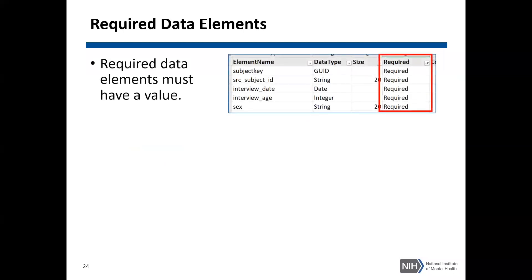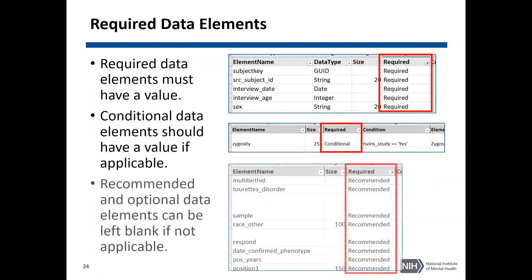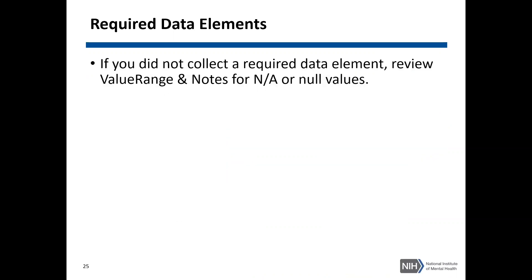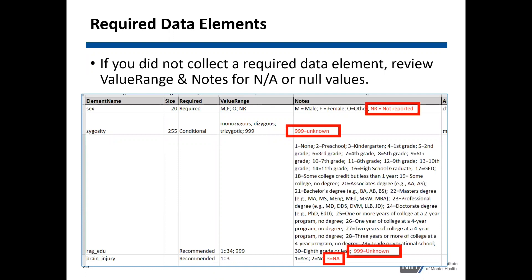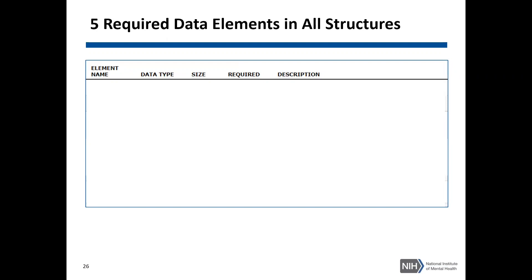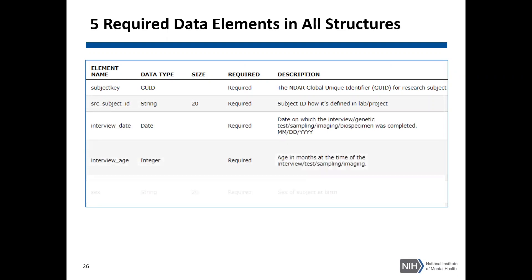Required data elements in every data structure must have a value. Conditional data elements should have a value if applicable to the condition. Recommended and optional data elements can be left blank if not applicable to your study. If you did not collect a required data element, review the value range and notes column of the definitions file or the data structure page to see if there are NA or null values you can enter. Every single data structure in NDA will have these five required data elements: subject key, SRC subject ID, interview date, interview age, and sex.